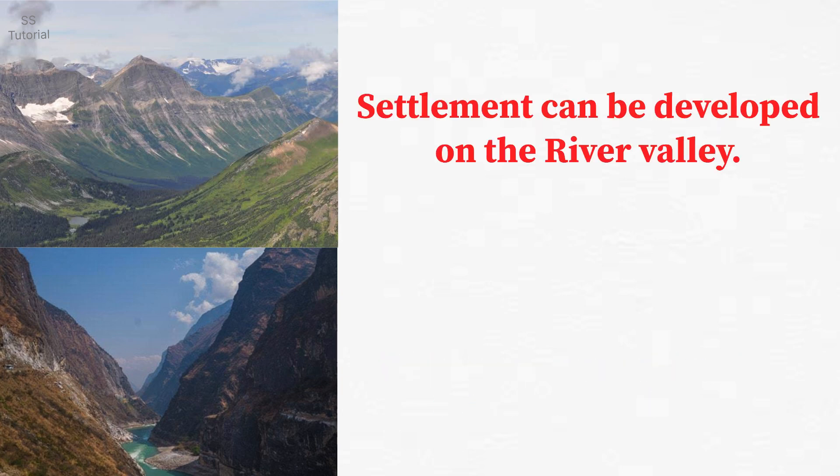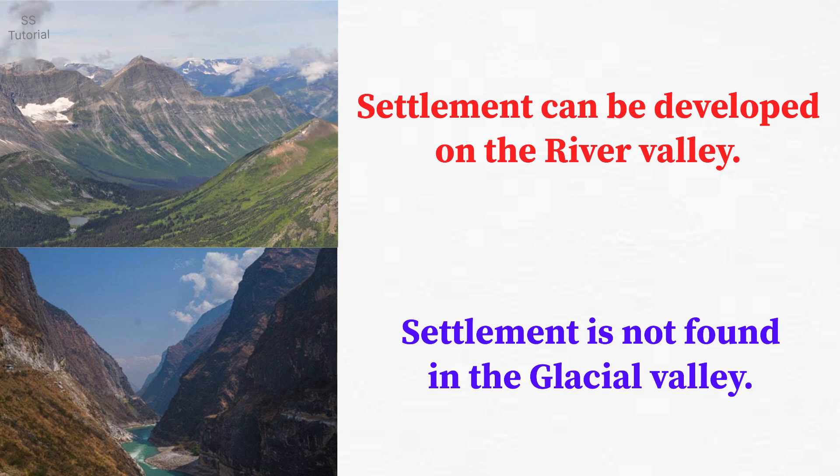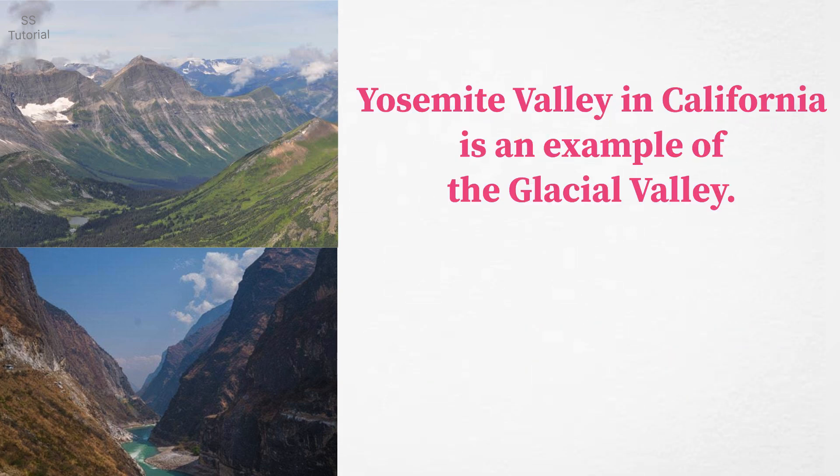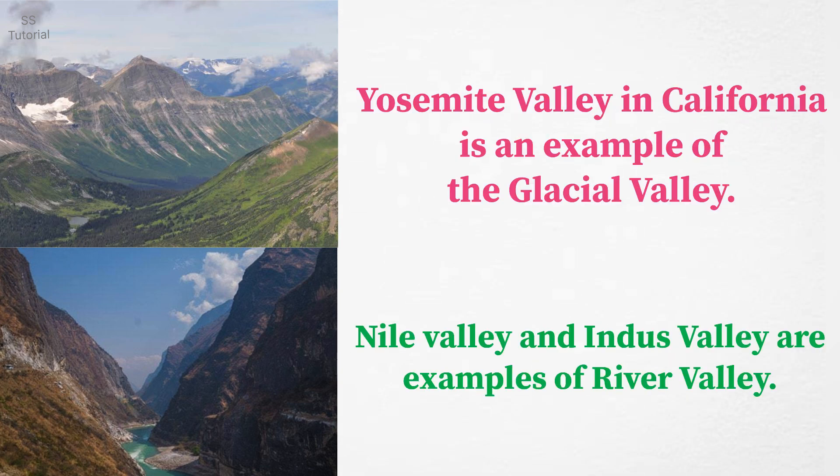Settlements can be developed on river valleys, whereas settlements are not seen in glacial valleys. Yosemite Valley in California is an example of a glacial valley, and the Nile Valley and Indus Valley are examples of river valleys.